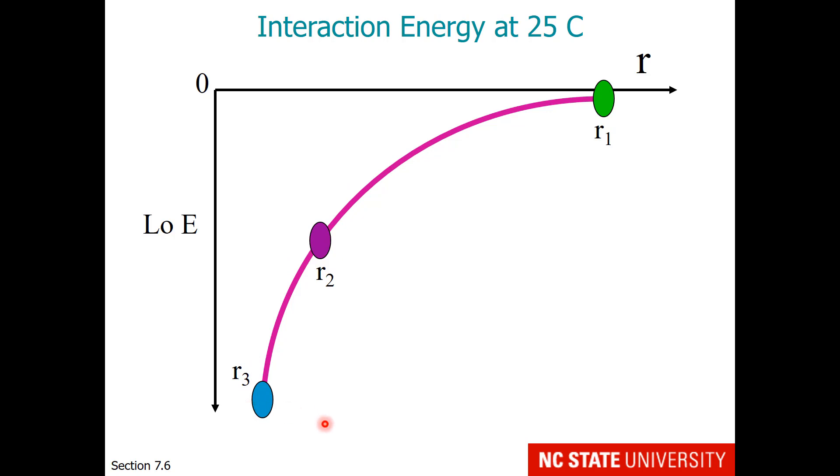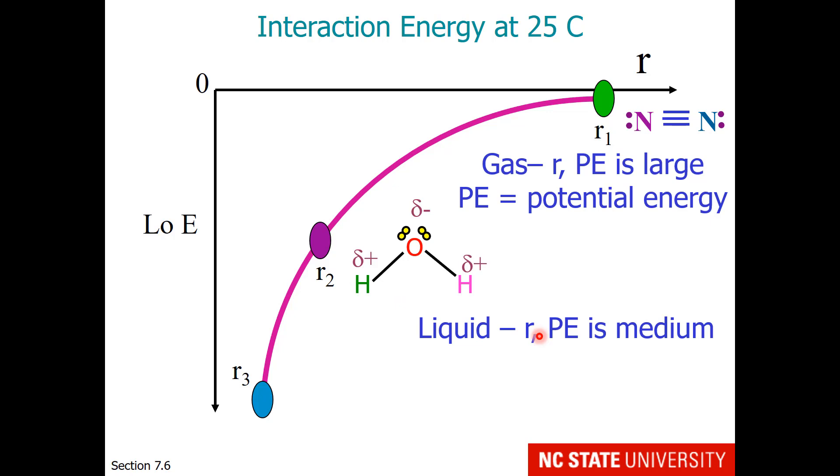So let's relate that to changes of state. Gas molecules or atoms are very far apart from one another, so their potential energy is large. Liquid molecules are closer to one another, so their potential energy is at a more medium level. And solid particles are very close together, so their potential energy is small and very negative relative to the potential energy of gases.